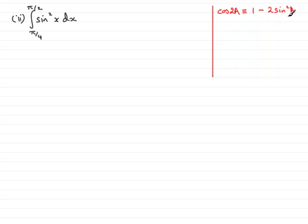What we do is we make the sin squared a the subject of this identity. So if I was to add 2 sin squared a to both sides, we would have 2 sin squared a plus cos 2a would be identical to 1.